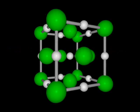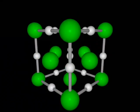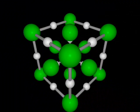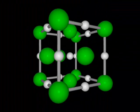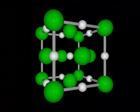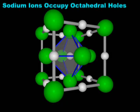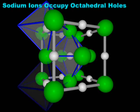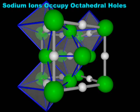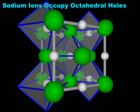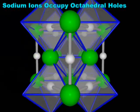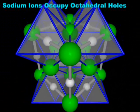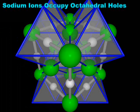Halite is the mineral name for sodium chloride. In the halite structure, the relatively large chloride ions, represented by the green spheres, form a face-centered cubic array. The sodium ions, represented by the white spheres, occupy the octahedral holes. Each sodium ion lies at the center of an octahedron of chloride ions. Since an array of N close-packed atoms gives N octahedral holes, and since there is one sodium ion for every one chloride ion, all of the octahedral holes are occupied. In contrast, the tetrahedral holes are vacant.